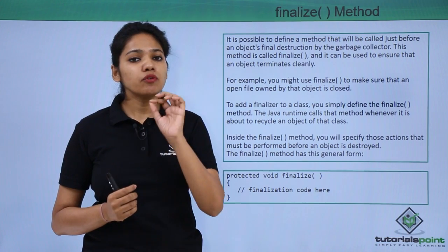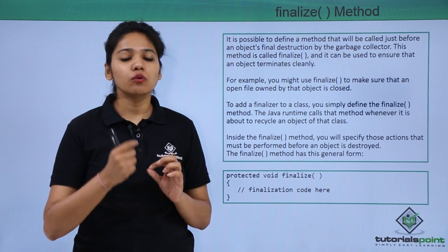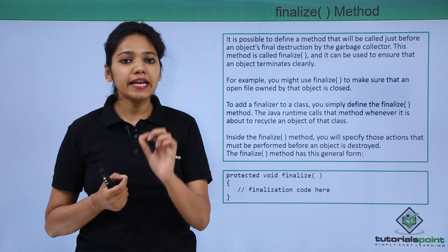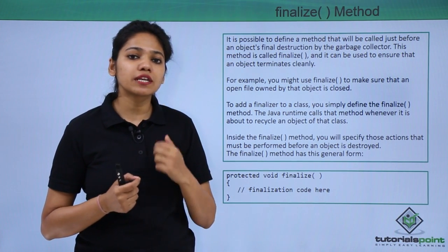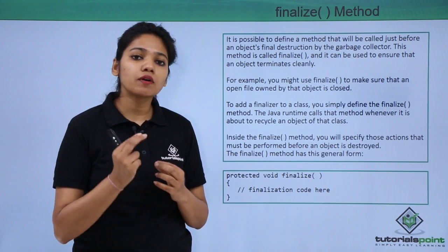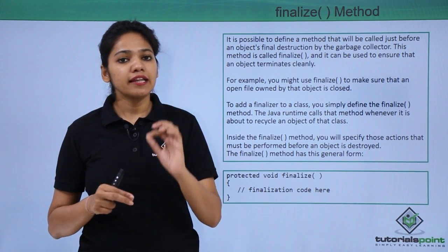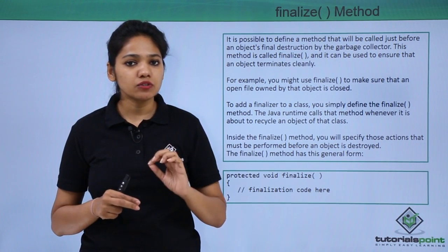But in Java, before a garbage collector is called, a finalize method is called. What this finalize method does is that it executes a code of statements which is nothing but a close operation. If you want to perform certain closing operations before a garbage collector is called, at that time a finalize method is called.